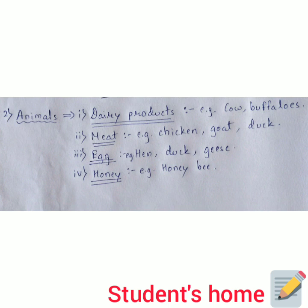The last point under animals is honey, which is obtained from only one animal — an insect known as the honey bee. Honey bees collect nectar and store it in their beehive, and from the beehive we extract the honey for our food. That's all for today's class, thank you.